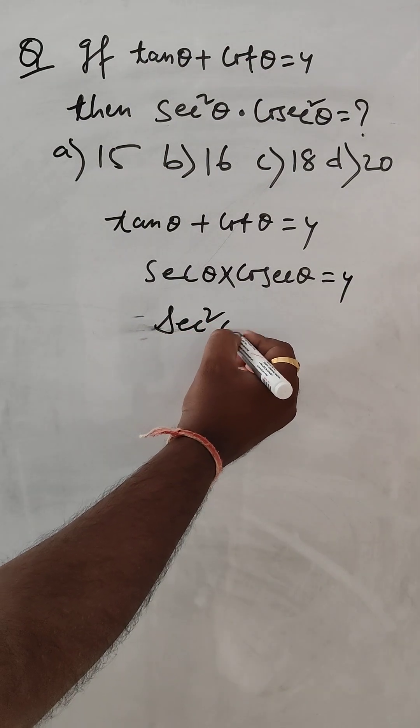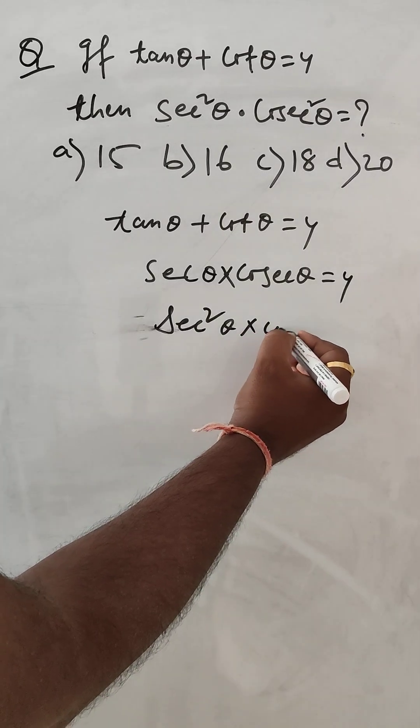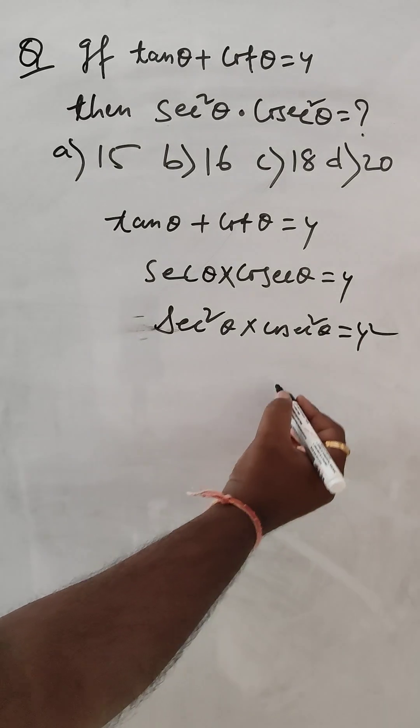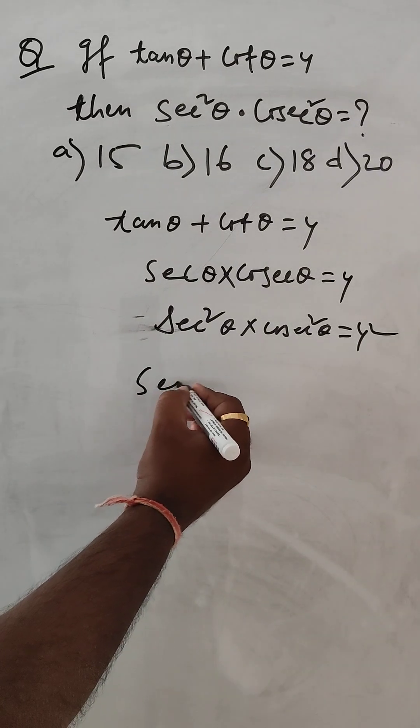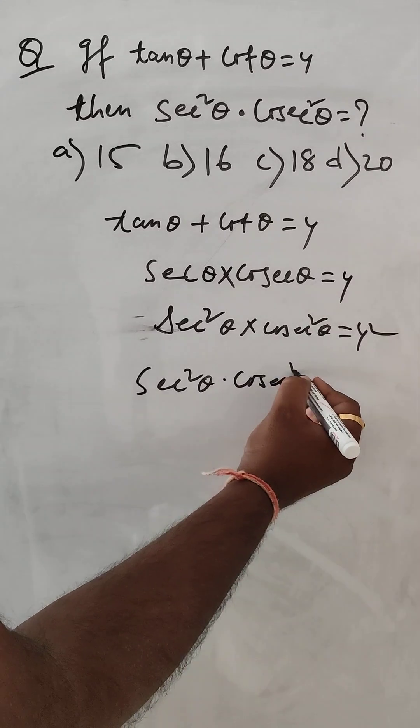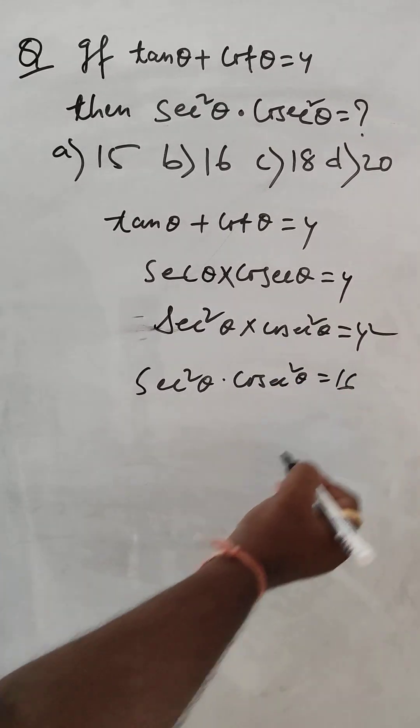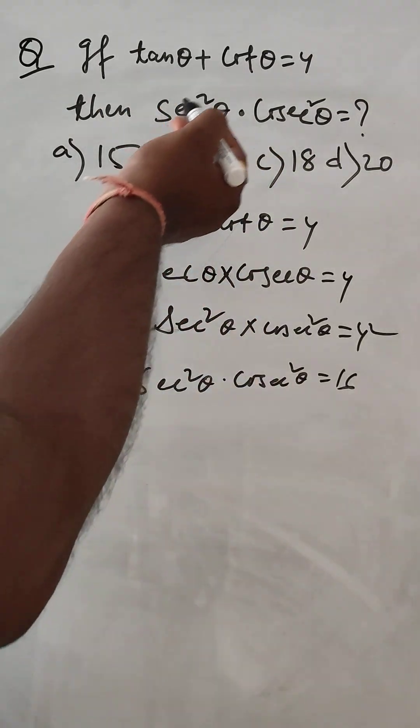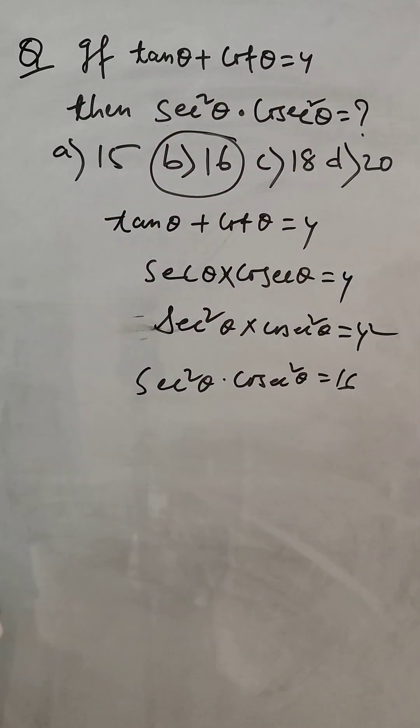Then sec square theta into cosec square theta is equal to 16. Correct. So this is your answer. So if you know the formula it can be done within 2 to 3 seconds or 5 seconds, hardly.